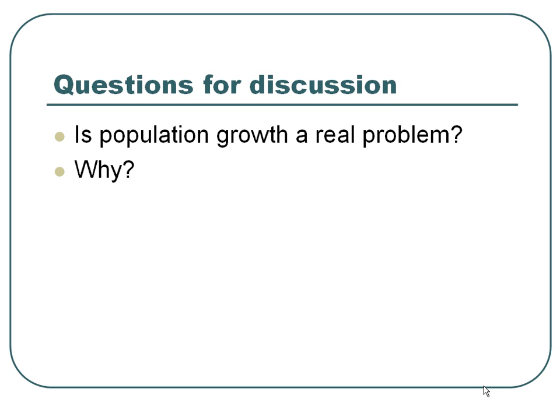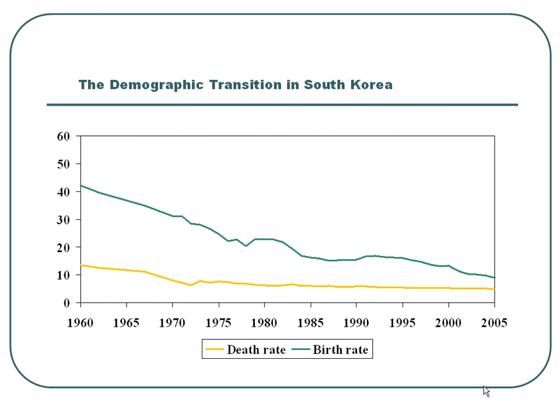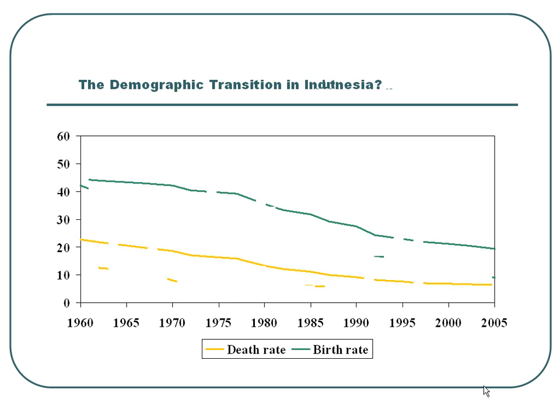We can look at some examples of death and birth rates over time for a series of countries, all on the same vertical scale. This shows the demographic transition in South Korea — death rate already relatively low at the beginning and the birth rate adjusting downwards so that population growth decelerates. In Indonesia, there is also evidence that birth rates have been falling more rapidly than the death rate, so that the rate of population change also slows.